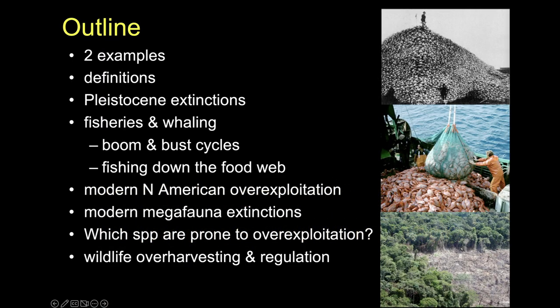As a reminder, we talked about a couple different examples, then the definitions, and Pleistocene extinction. We've been talking about fisheries and whaling as one example. A couple ideas there: boom and bust, serial depletion, moving from one thing to another. And then the one thing we haven't talked about yet is this idea of fishing down the food web, which came from fisheries but applies to a bunch of different things.